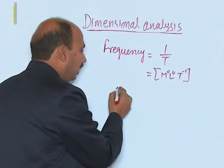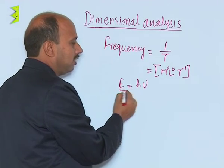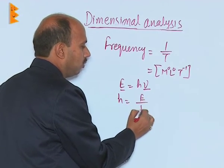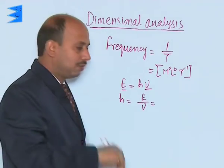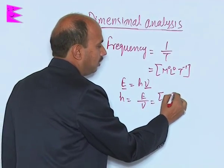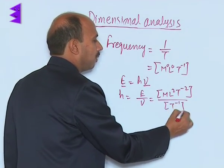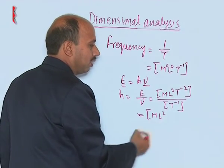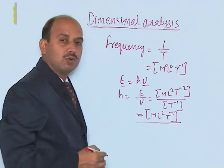For Planck's constant, from E = hν, we get h = E/ν. E is energy (same dimensional formula as work: M L² T⁻²), and ν is frequency (T⁻¹). So h = M L² T⁻² divided by T⁻¹, which gives M L² T⁻¹. This is the dimensional formula of Planck's constant.